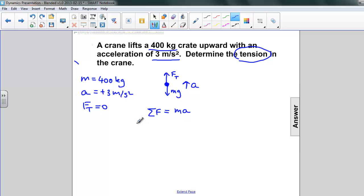Our net forces are tension upward, weight downward, and that's equal to mass times acceleration. I'm going to add mg to both sides, and I'm going to collect